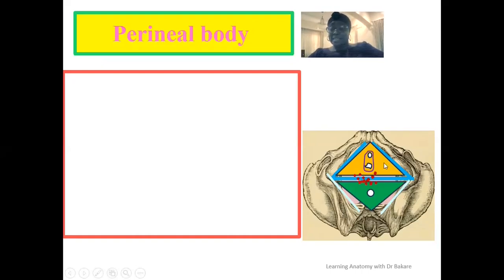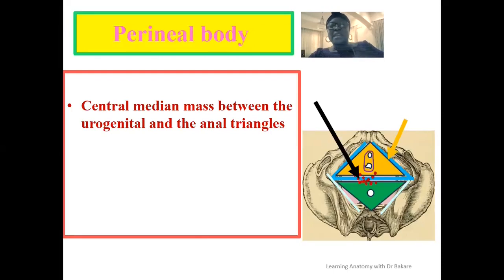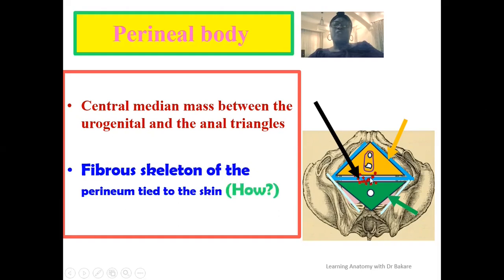The perineal body, highlighted here in black, is a central mass of fibromuscular tissue seen between the urogenital triangle anteriorly and the anal triangle posteriorly. It forms a fibrous skeleton of the perineum and is tied to the skin, creating a skeletal framework. If you drive deep through the perineal body, it is made up of fibers contributed from neighboring muscles.